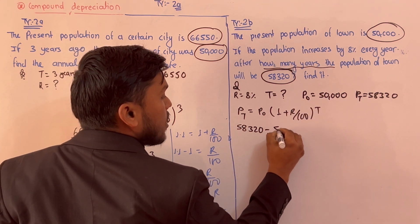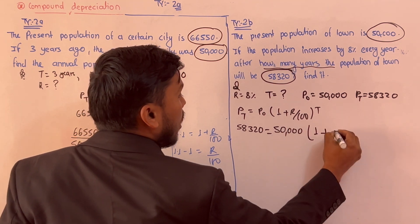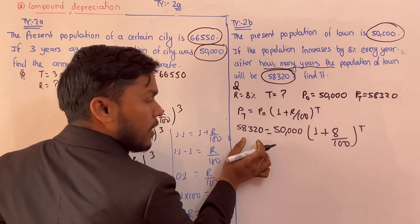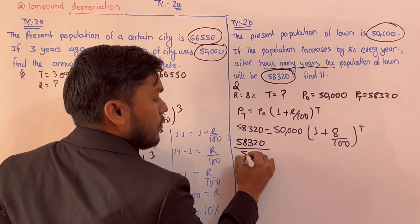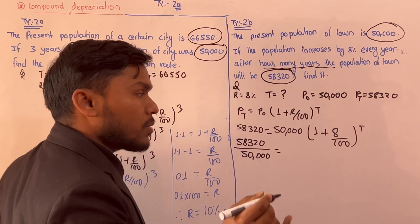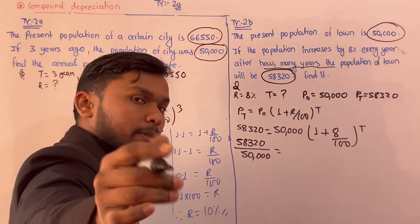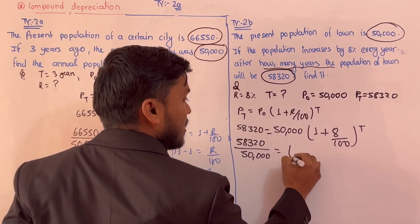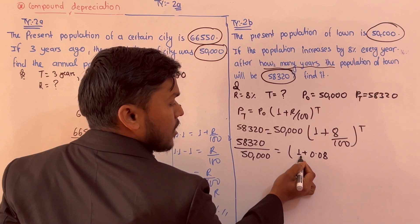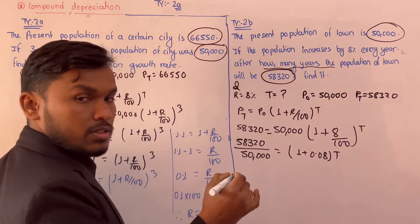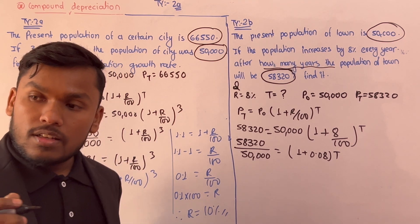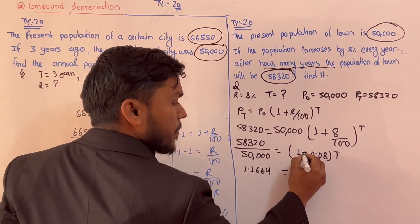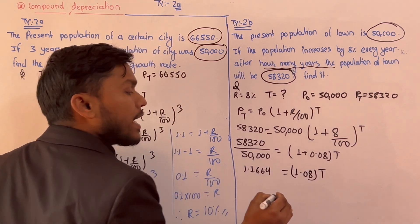So 58,320 divided by 50,000. The formula gives us 1.1664 equals (1.08) to the power t.